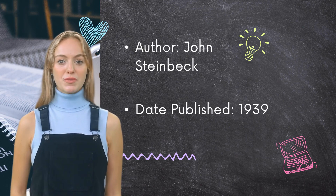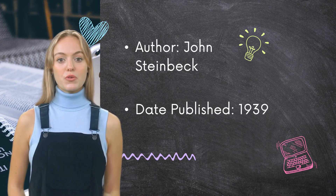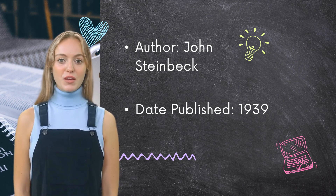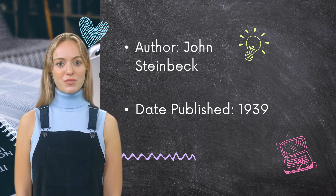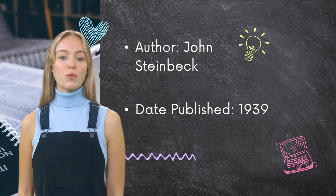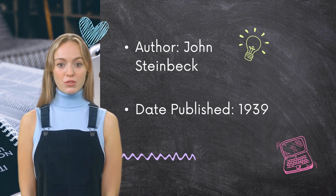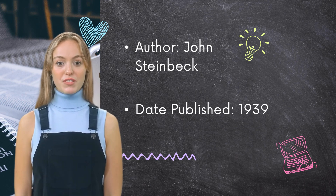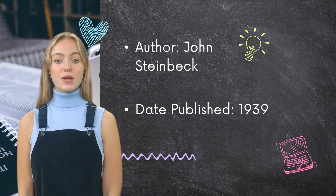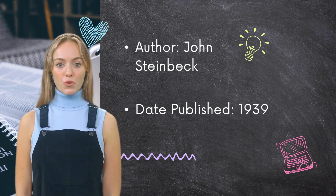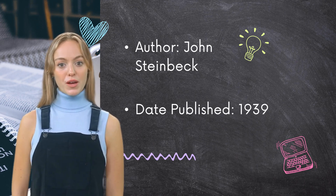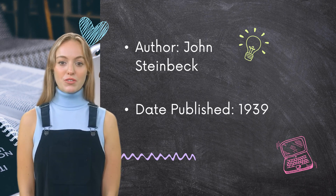He grew up in a middle-class family and developed an interest in writing from a young age. After attending Stanford University for a few years, Steinbeck left without obtaining a degree and worked as a manual laborer, a journalist, and a caretaker at a fish hatchery. In 1935, Steinbeck published his first successful novel, Tortilla Flat, which was followed by Of Mice and Men in 1937.